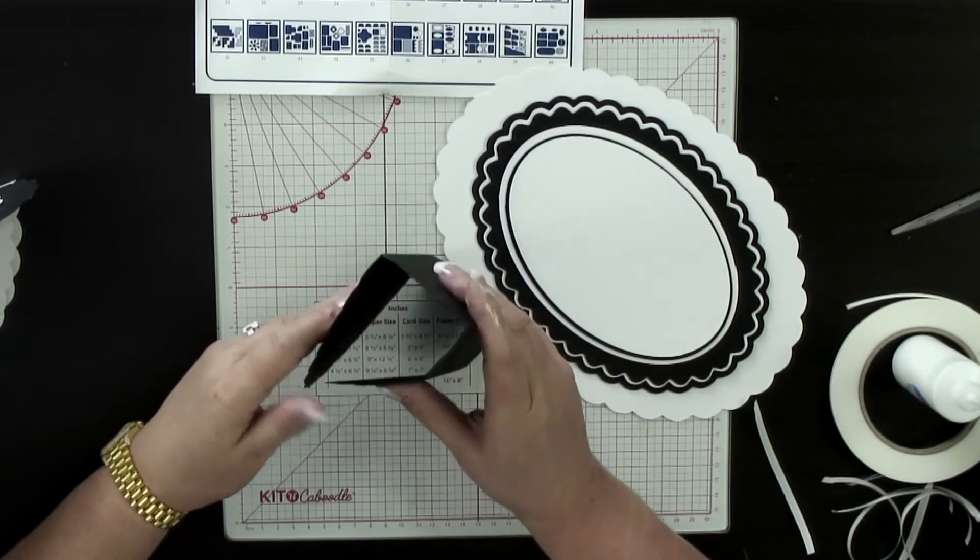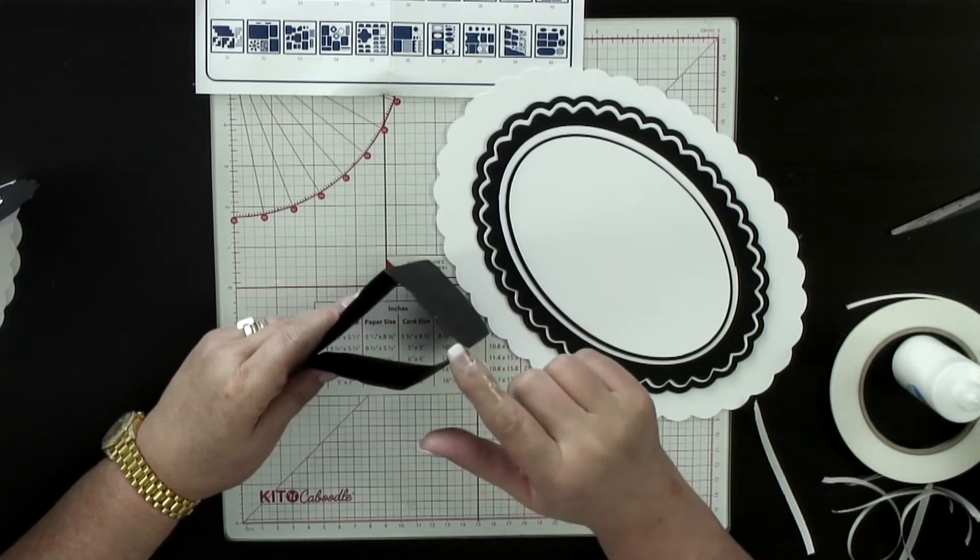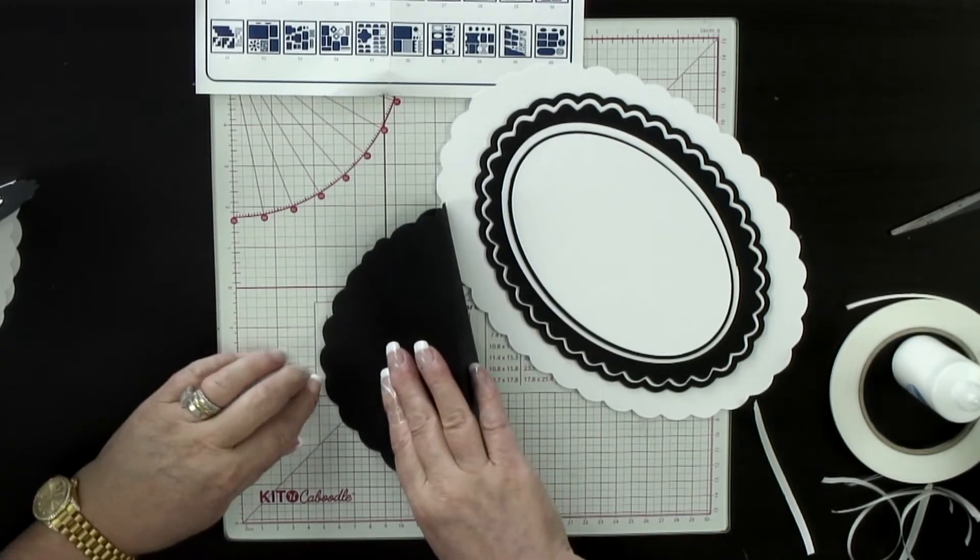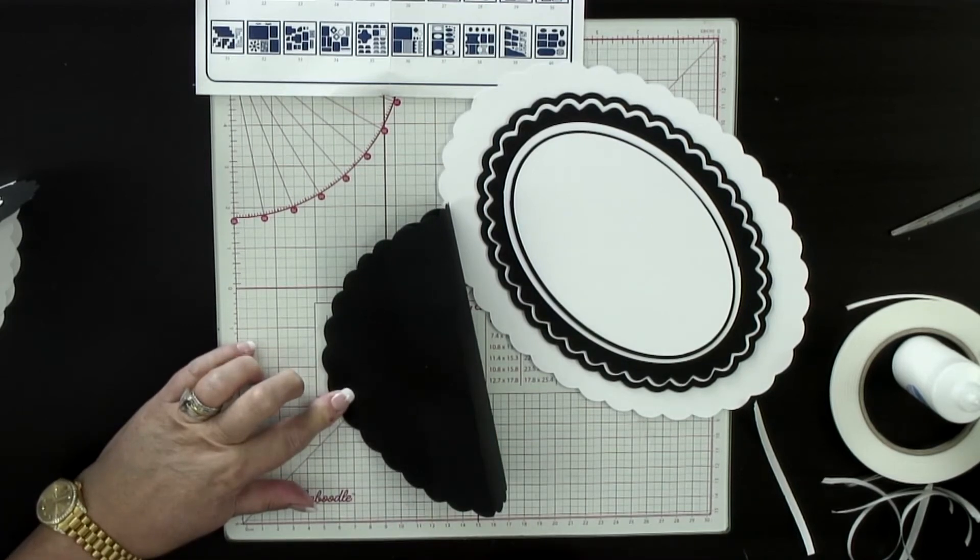And then these two pieces here, these two score lines, this one and this one, are what are going to create the detail and hold it together.